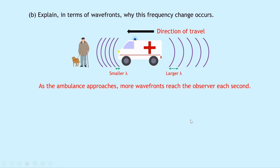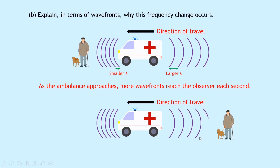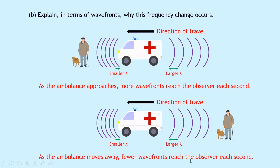However, if we now consider the ambulance moving away from the pedestrian — again our old man with a dog — the ambulance is moving to the left. We sketch on the wave fronts again: the front of the ambulance has wave fronts the same as before, and behind the ambulance the wave fronts are more spaced out. We've got a smaller wavelength in front of the ambulance and larger wavelengths behind it. A large wavelength corresponds to a small frequency. So as the ambulance moves away, fewer wave fronts reach the observer each second, meaning they observe a decrease in the frequency of the sound waves.